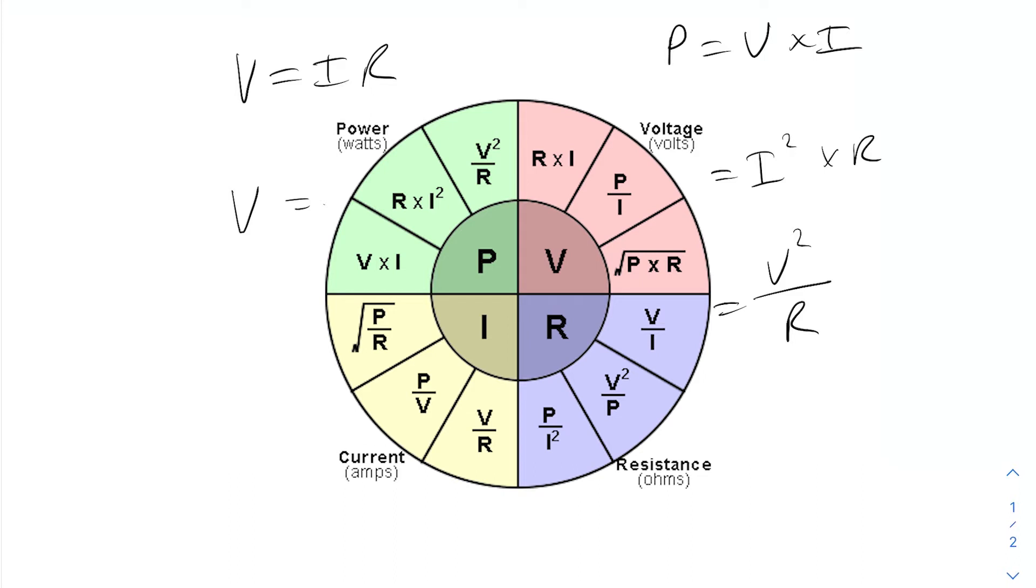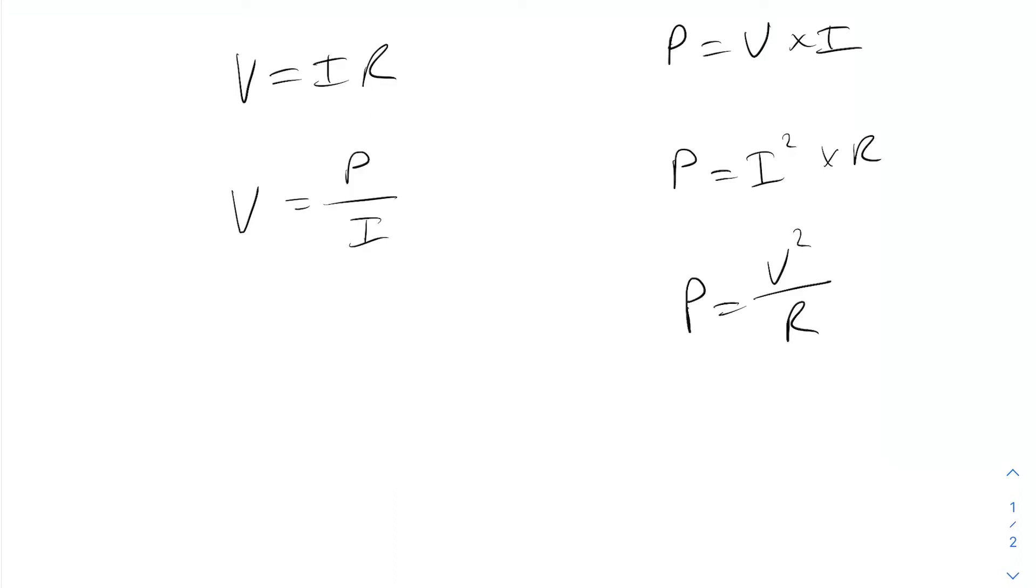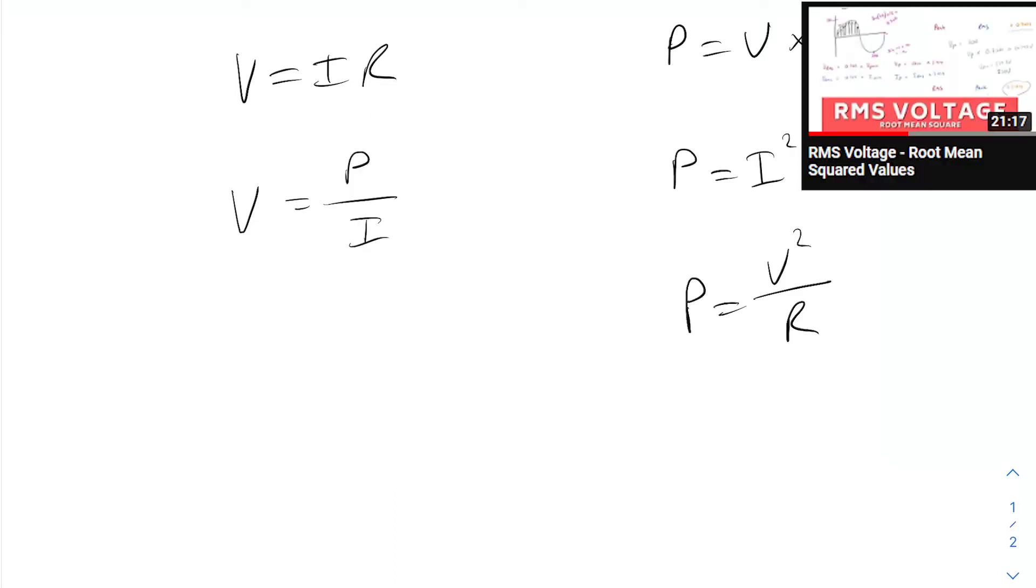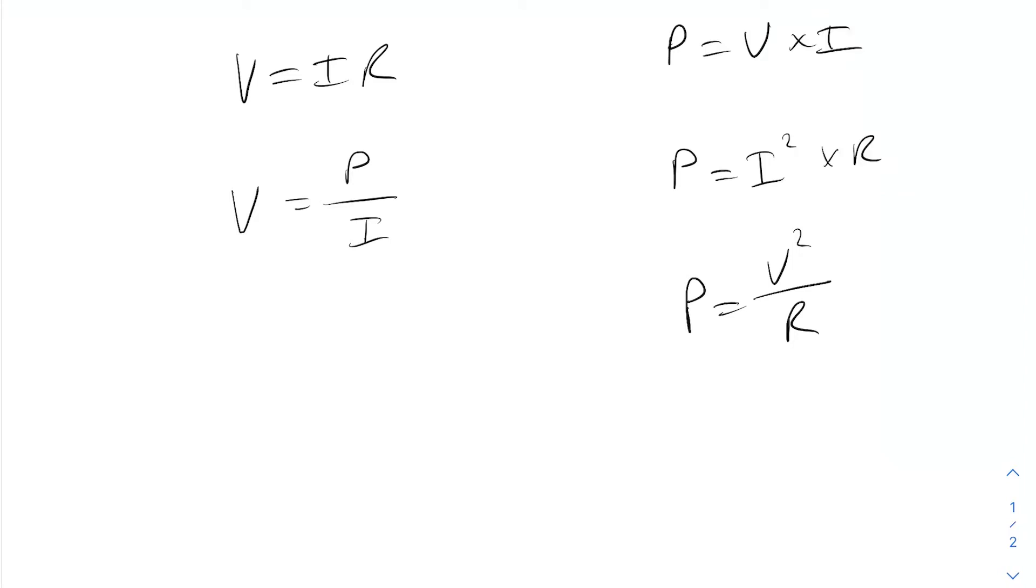So in the last video, we covered RMS values. RMS values, root mean square values. If you haven't watched that, go back and watch it. Like I said, it's a very important part of electrical engineering. So RMS values apply to both voltage and current. As such, we can use the RMS values of voltage and current in these equations here.